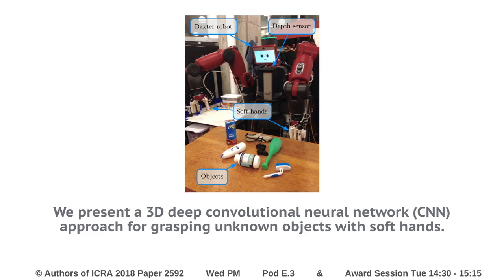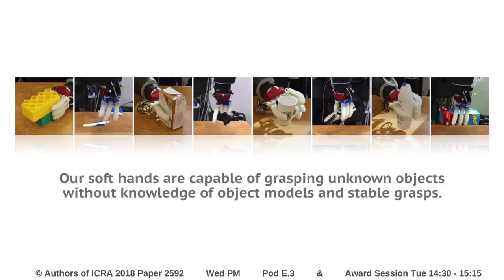In this work, we present a 3D CNN approach for grasping previously unseen objects with compliant soft hands. A depth sensor is affixed to the upper torso of the robot, and the point clouds from the sensor are used to predict suitable grasps for the objects on the table.